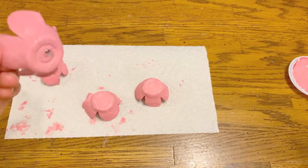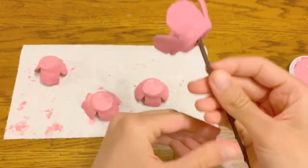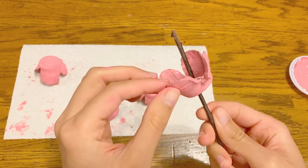You want your holes to be big enough that the stick fits through it, but not so big that your petal falls off the stick. This looks about right.